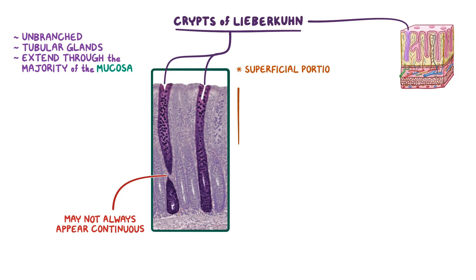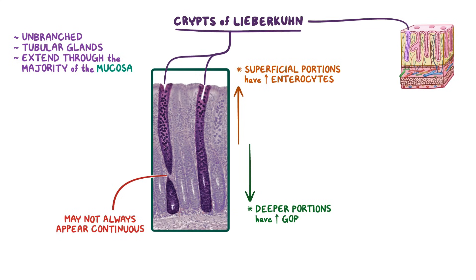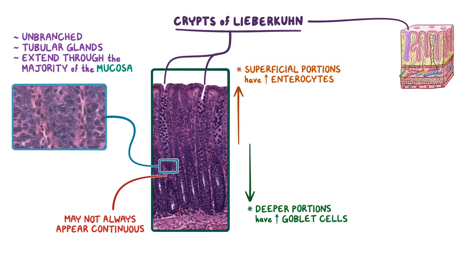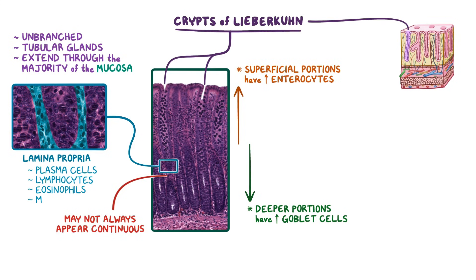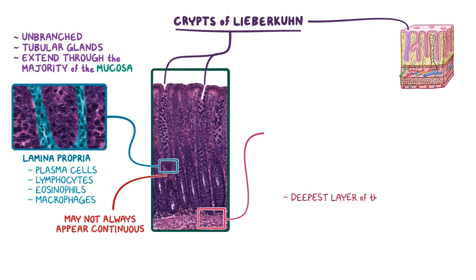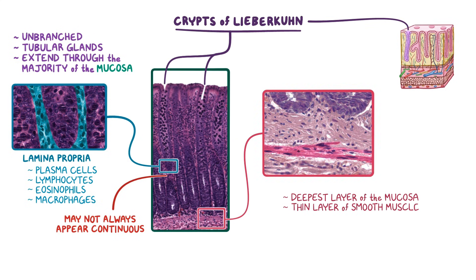The superficial portions of the crypts will typically have a higher concentration of enterocytes, and the deeper portions will have a high concentration of goblet cells. The tissue found between the crypts and the epithelium is the lamina propria, which consists of many types of immune cells including plasma cells, lymphocytes, eosinophils, and macrophages. The deepest layer of the mucosa is a thin layer of smooth muscle called the muscularis mucosa.